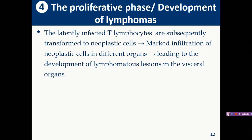Clinical signs are most frequently seen between 12 to 24 weeks of age. The signs are not characteristic for Marek's disease alone. For easier understanding, clinical signs are classified into four forms: classical form, acute form, acute cytolytic disease form, and transient paralysis form.